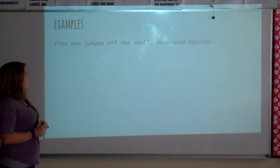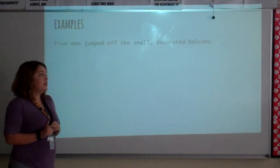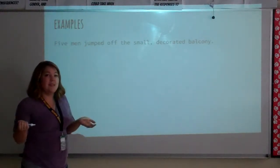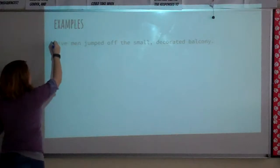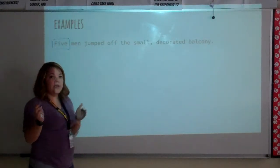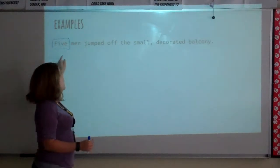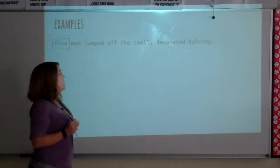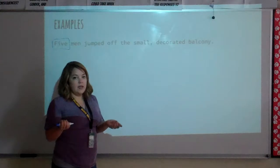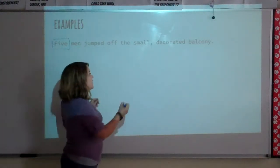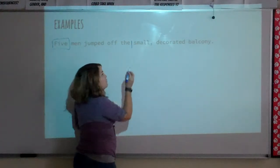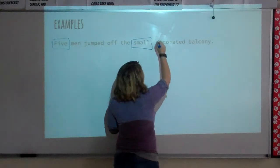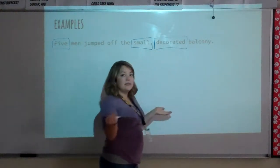Next example: five men jumped off the small decorated balcony. The first adjective I see is a number — the word five is actually an adjective because it's describing how many men are in this sentence. I see two more adjectives describing a noun: small is describing balcony, and decorated is also describing the noun balcony.